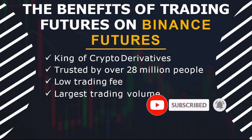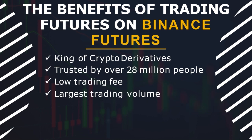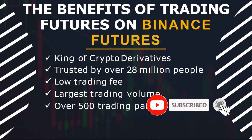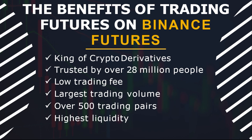Another benefit is that Binance has the largest trading volume. When a market is doing very well it depends on trading volume — the more money in a particular asset, the better it can perform. Binance has the highest trading volume, and that is what makes it outstanding. Also, you have over 500 trading pairs to choose from when it comes to trading futures on the Binance futures trading option.